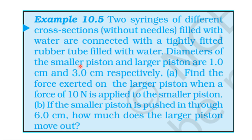From NCRT Textbook, from the topic Mechanical Properties of Fluids, Example 10.5. Two syringes of different cross-sections without needles, filled with water, are connected with a tightly fitted rubber tube filled with water. Diameters of the smaller piston and larger piston are 1 cm and 3 cm respectively. Find the force exerted on the larger piston when a force of 10 newton is applied to the smaller piston.